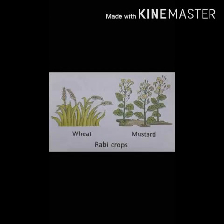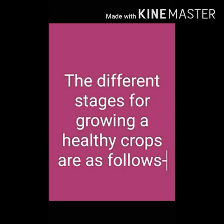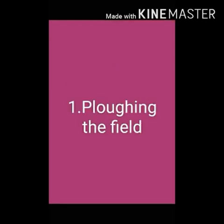Rabi crops include wheat, barley, gram, pea, and mustard. They are grown in the winter season, that is from November to April. Growing healthy crops is important because they help in feeding the entire population of a country. A good crop adds to the wealth of the nation. Therefore, while growing crops, farmers have to keep several things in mind. There are different stages for growing a healthy crop.